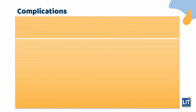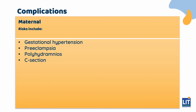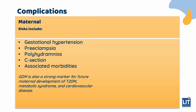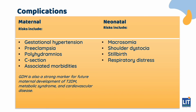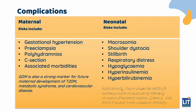The complications of GDM can be broadly classified into maternal and neonatal. Maternal risks include gestational hypertension, preeclampsia, polyhydramnios, C-section and associated morbidities. GDM is also a strong marker for future maternal development of type 2 diabetes mellitus, metabolic syndrome, and cardiovascular disease. In neonates, there is a wide range of complications including macrosomia, shoulder dystocia, stillbirth, respiratory distress, and metabolic outcomes such as hypoglycemia, hyperinsulinemia, and hyperbilirubinemia. Additionally, there could be difficult delivery such as operative delivery instead of normal vaginal delivery, and birth trauma from assisted delivery.